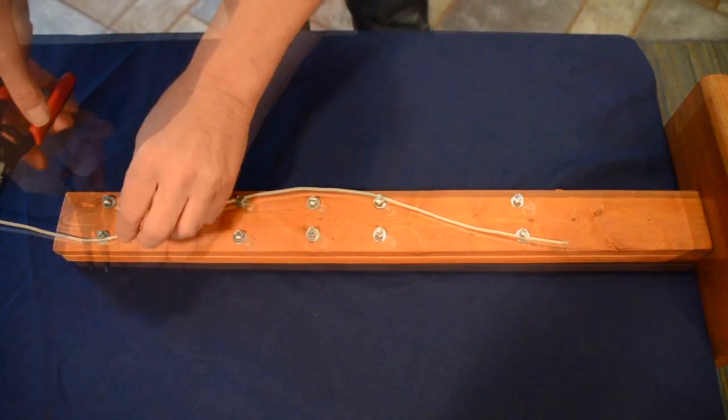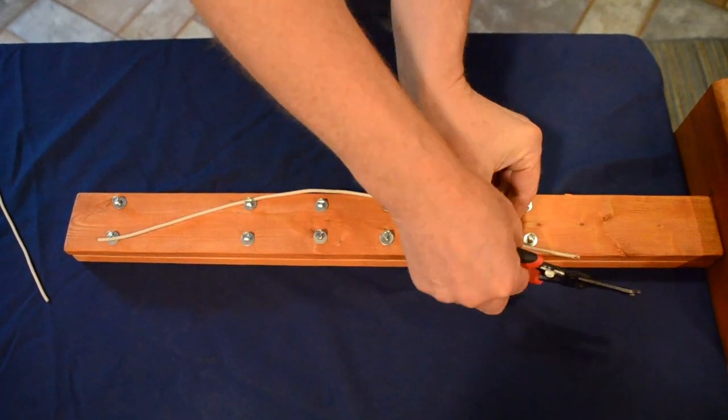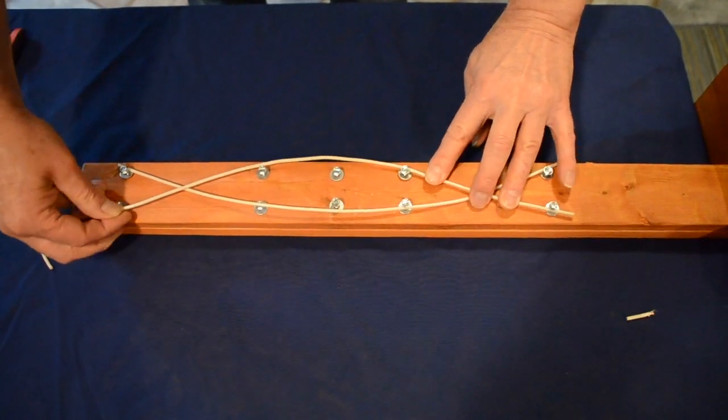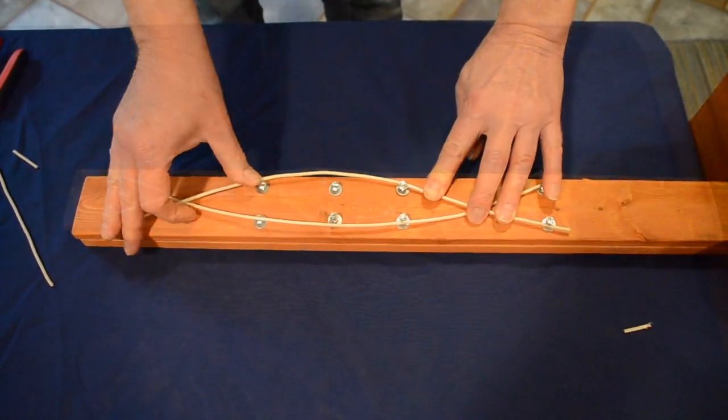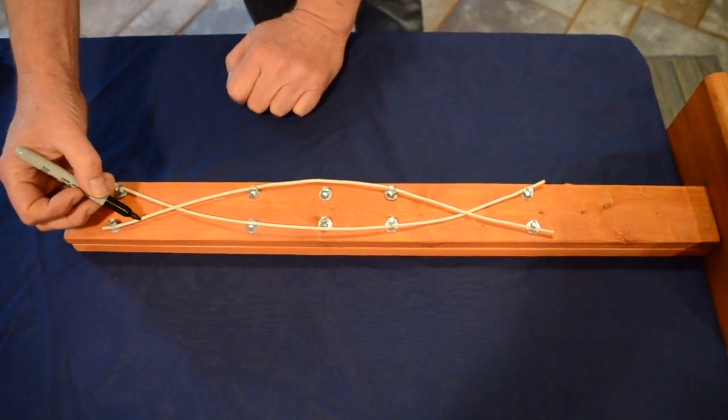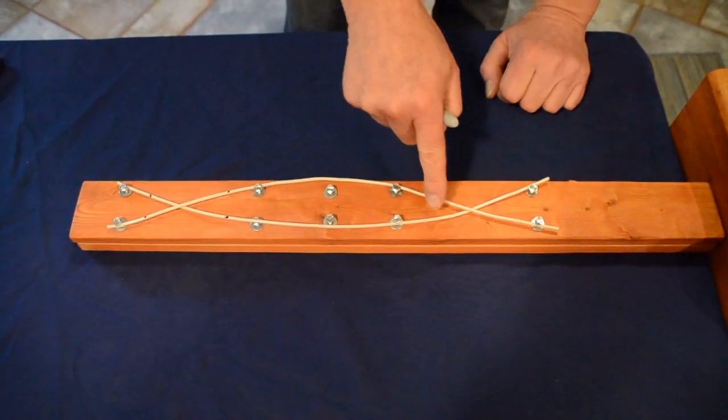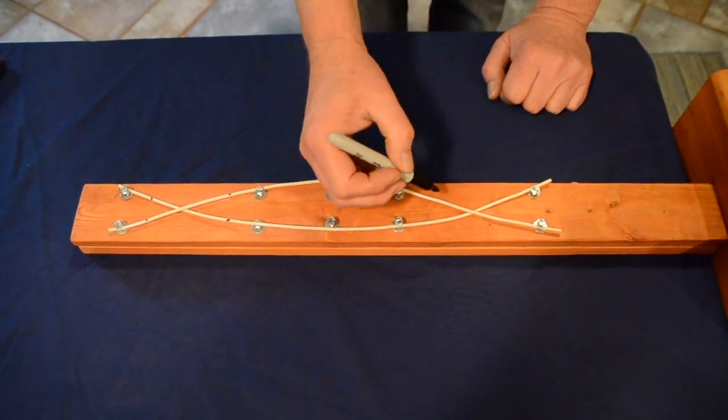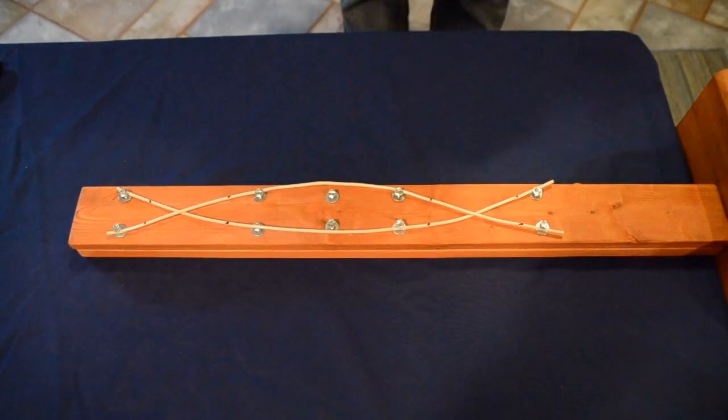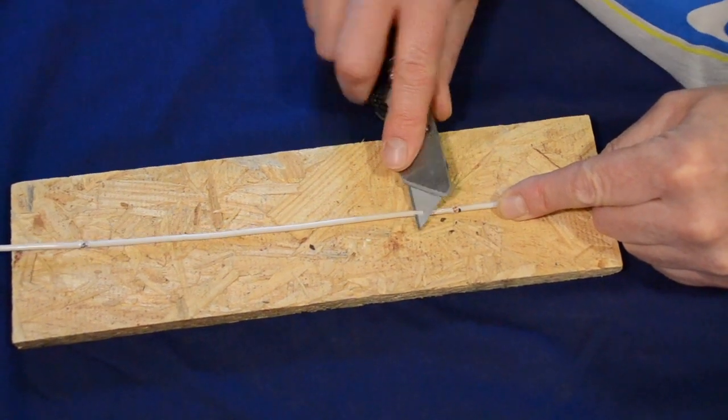Whoa, that one went flying. Place your insulated wires back in position. Where the wires cross we will make some marks. We want to leave the insulation on this section of the wires. Strip the insulation from the center section and from the ends of each wire.